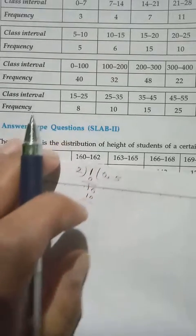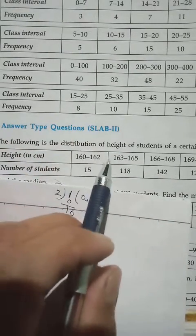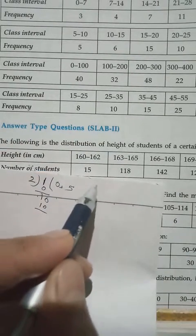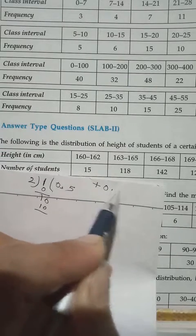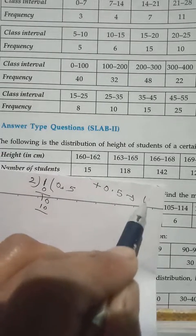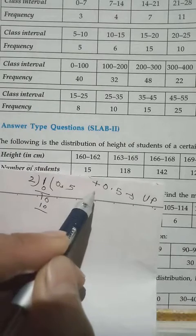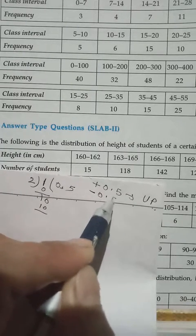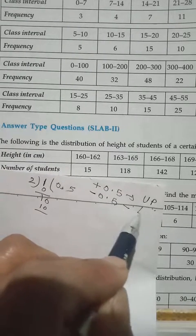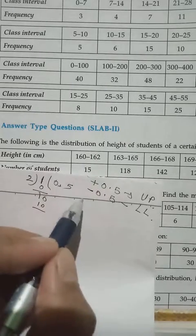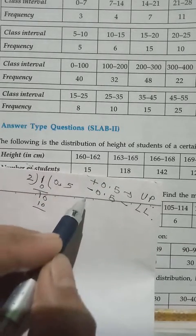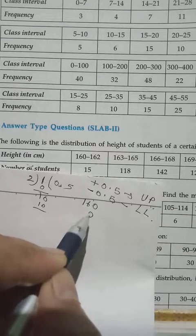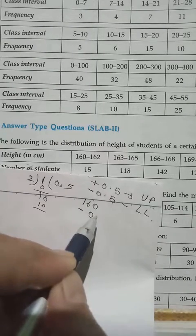So we have to change the class interval into continuous one. How to do? We plus 0.5 to upper limit. We minus 0.5 from the lower limit. So here the lower limit is 160. We have to minus 0.5.